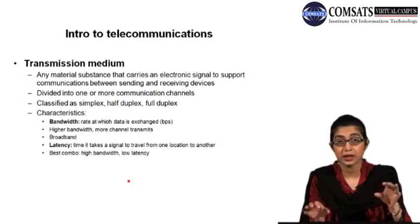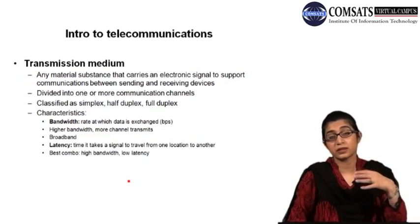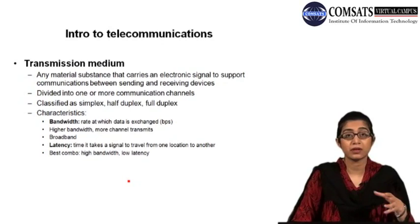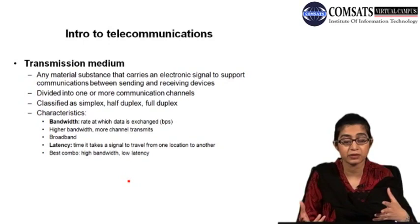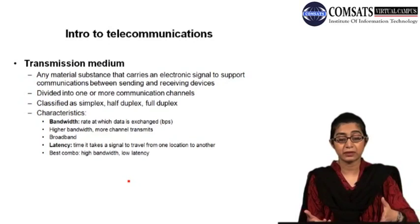When we talk about transmission medium, its characteristics include bandwidth, which defines the speed of the transmission or the rate at which data is exchanged, calculated in bits per second. If you hear that a connection bandwidth is 1 Mbps or 2 Mbps, it's megabits per second — this is the measurement unit for the rate of data exchange. If you have a higher bandwidth, the channel is transmitting more. Usually your broadband communication has higher bandwidth.